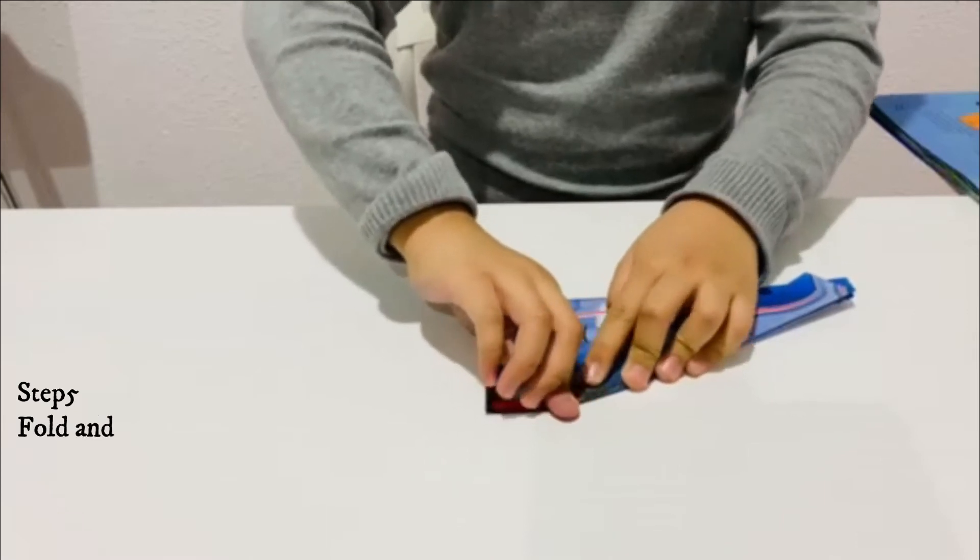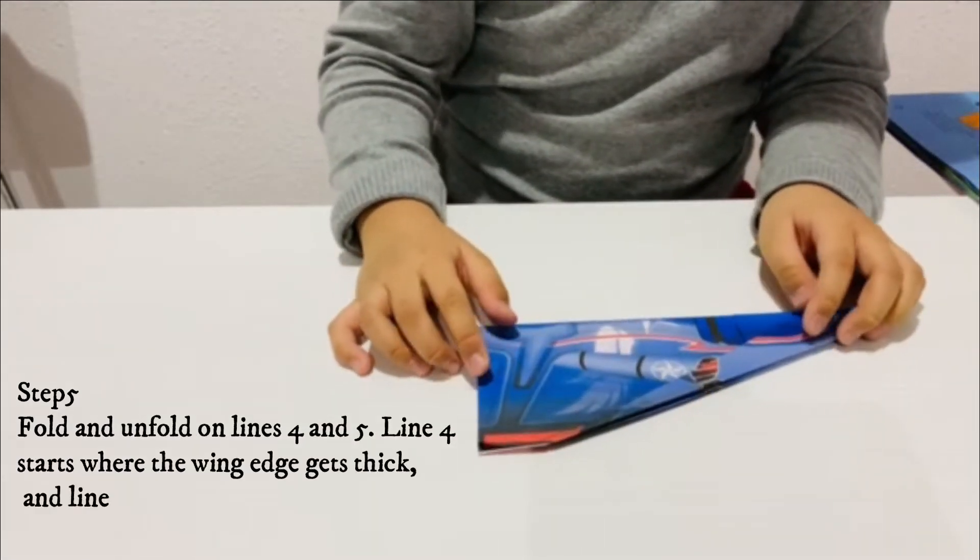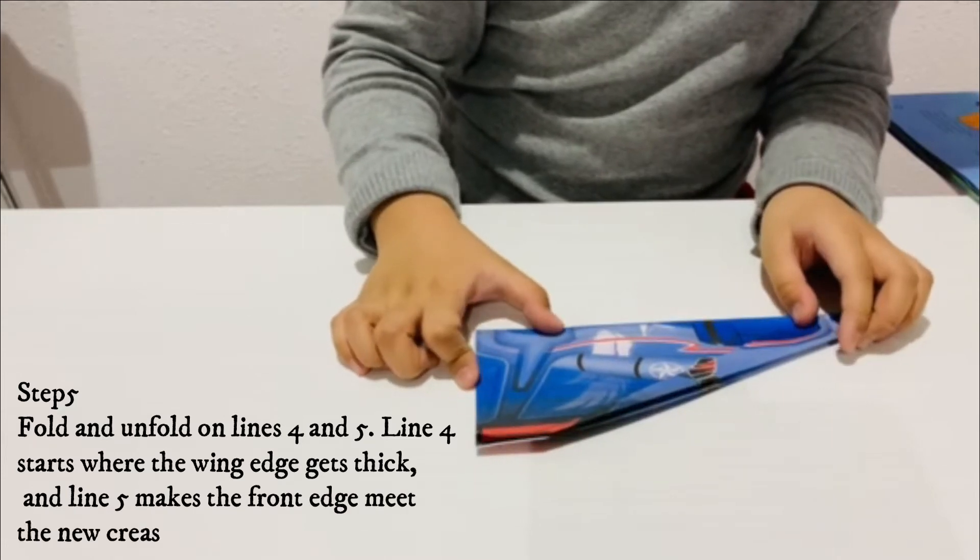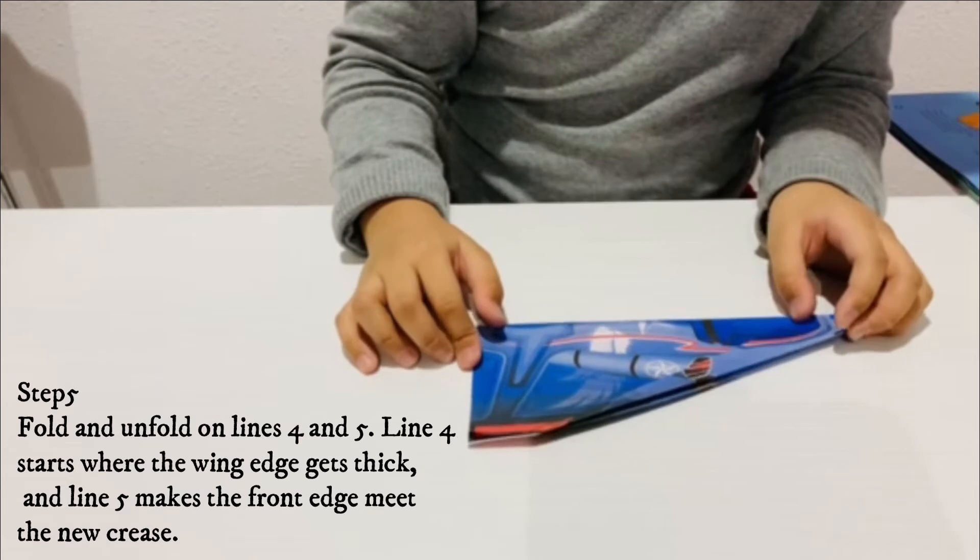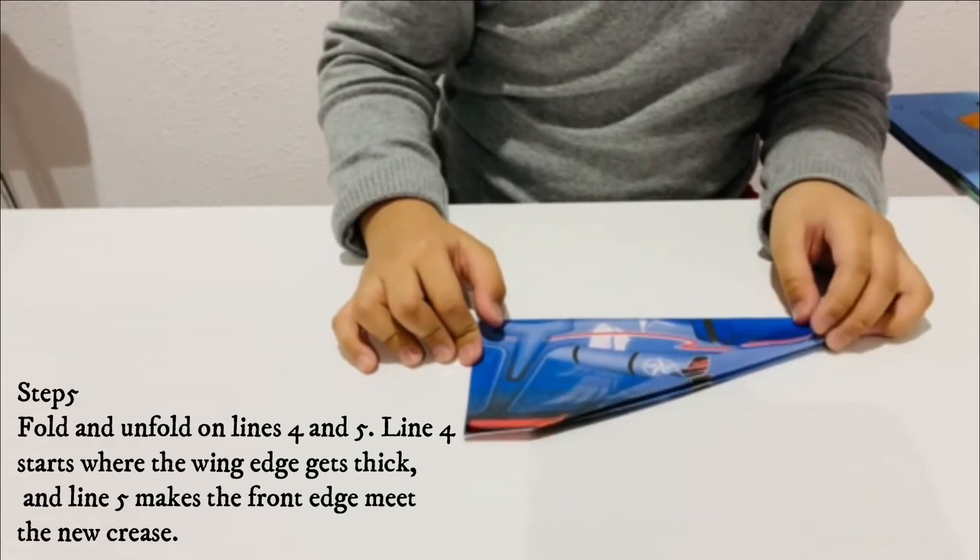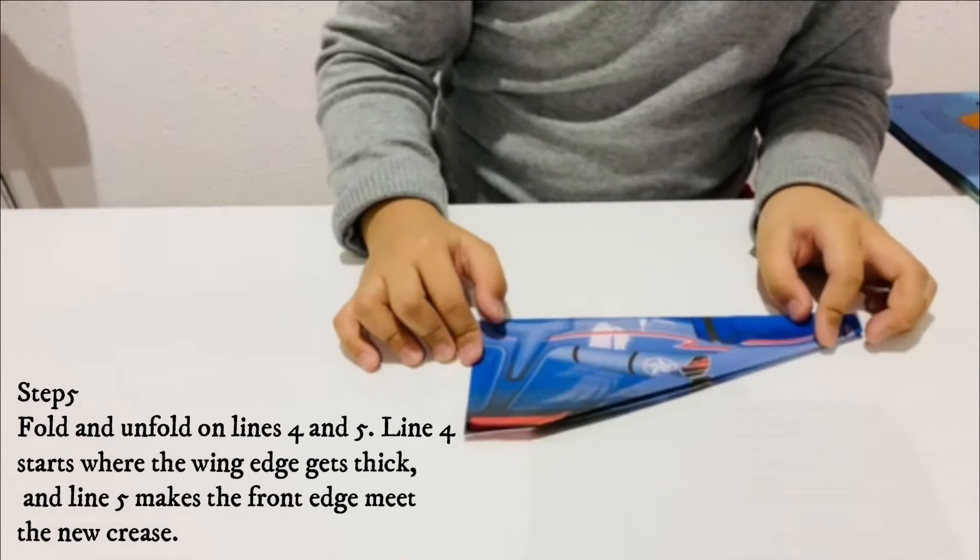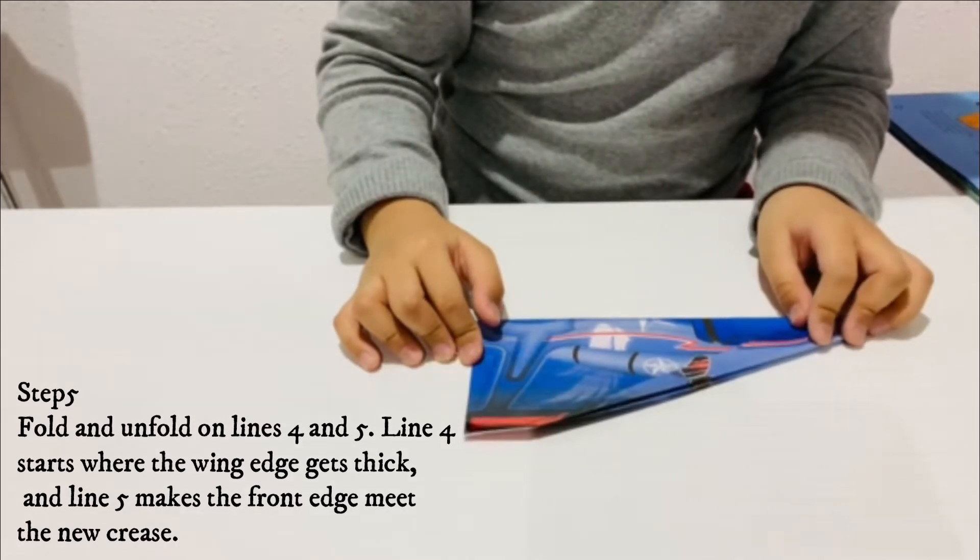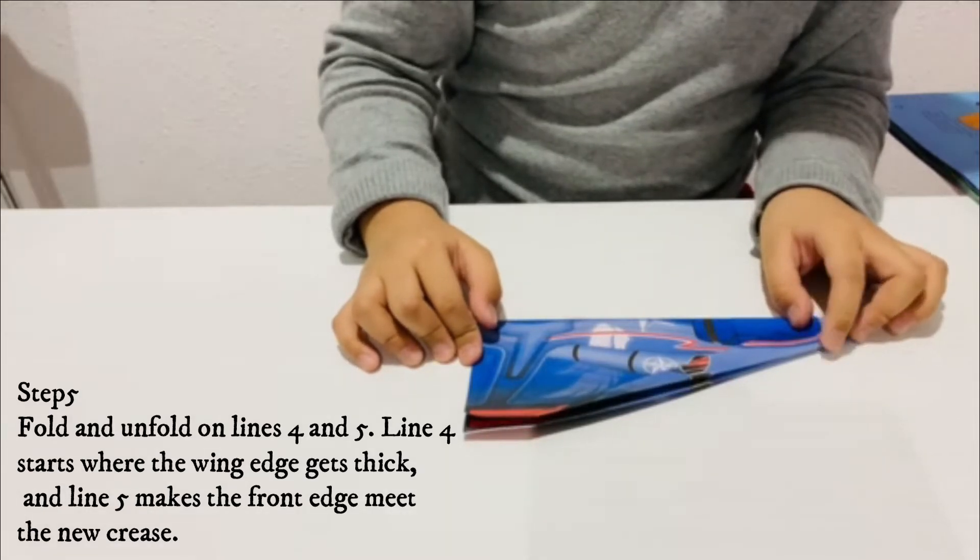Step 5: Fold and unfold on lines 4 and 5. Line 4 starts where the wing edge gets thick, and line 5 makes the front edge meet the new crease.